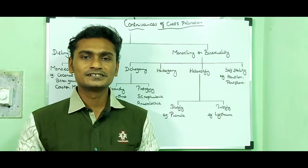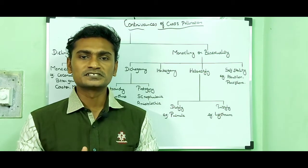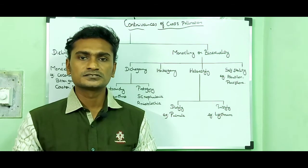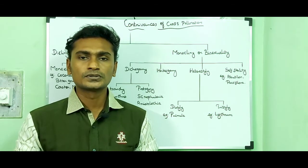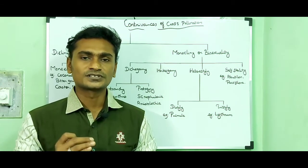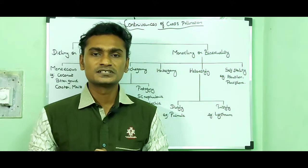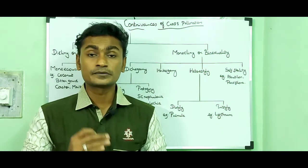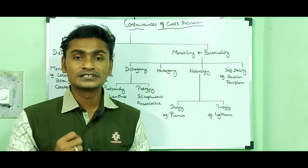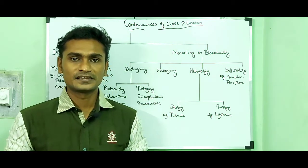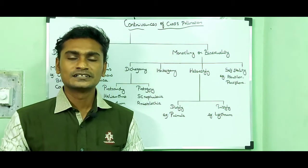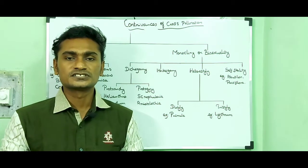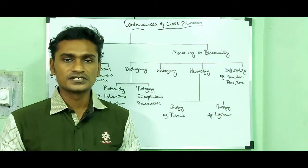Hi students, this is Mandirikmar Rajesh. In this video, we are going to discuss the topic called Contrivances of Cross-Pollination. That means the flowers have several adaptations or mechanisms to promote cross-pollination, and that condition is called Contrivances of Cross-Pollination or outbreeding devices.